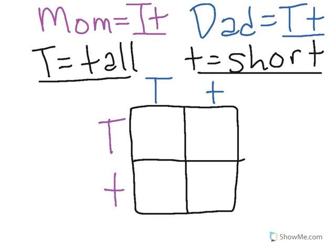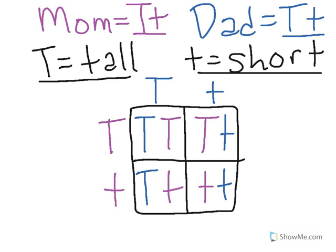You want to bring the traits from the top down into the boxes below them, and the traits across the side to the right, to the boxes to the right of them. And this way, we've distributed all of the traits from the mom and the dad to the offspring.